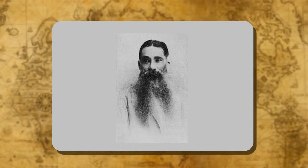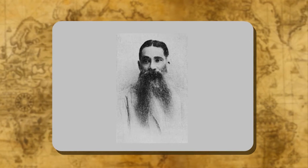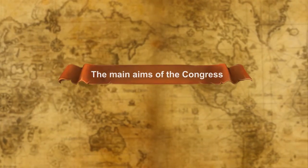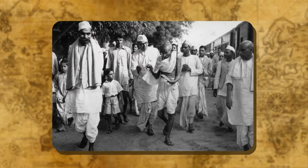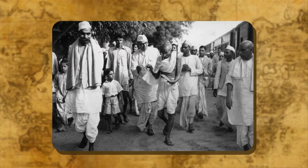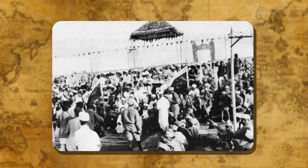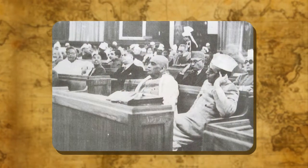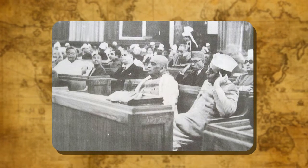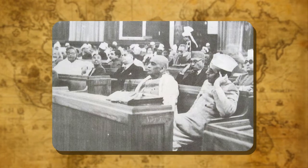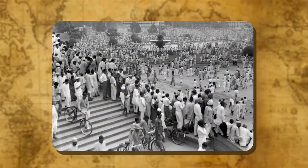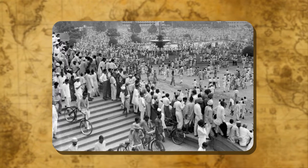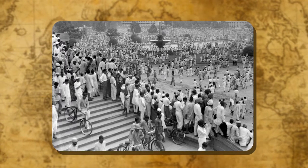The first session was presided over by W.C. Banerjee and attended by 72 delegates. The main aims of the Congress were to promote friendly relations among nationalist workers, to develop and strengthen feelings of national unity, to formulate popular demands and place them before the government, and to train and organize public opinion. The first session ended with delegates affirming their loyalty to the British crown and declaring that all they desired was greater involvement and participation of Indians in the government. This soft, conciliatory attitude would, in 44 years' time, be transformed into a strident demand for Purna Swaraj.